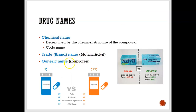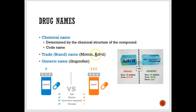A generic name is ibuprofen, and we may recognize ibuprofen as Advil. Notice how 'ibuprofen' has a lowercase 'i,' but 'Advil' has a capital 'A.' So if it's capitalized, it's likely a trade name, and if it's lowercase, it's likely a generic name.